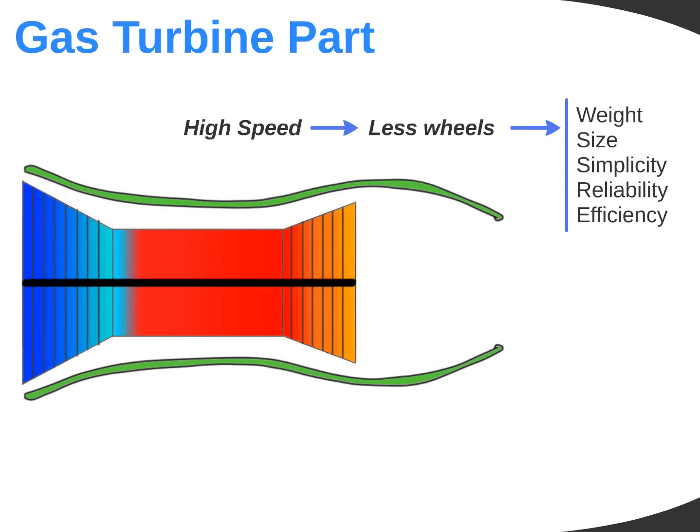A main aspect in a gas turbine efficiency is rotational speed. High speed means less wheels to compress the air and to get energy back from the exhaust gas. Thus, less weight, less size, more simplicity, more reliability, and more efficiency. For a 320-size optimized engine, low-pressure stage has to be around 10,000 rpm, and high pressure should be around 15,000 rpm.